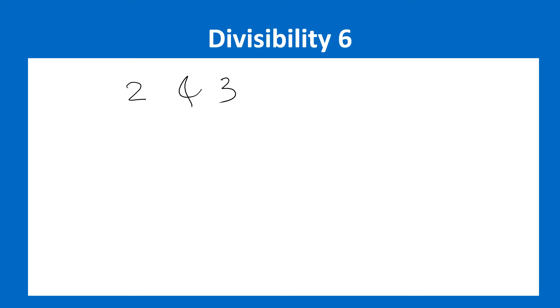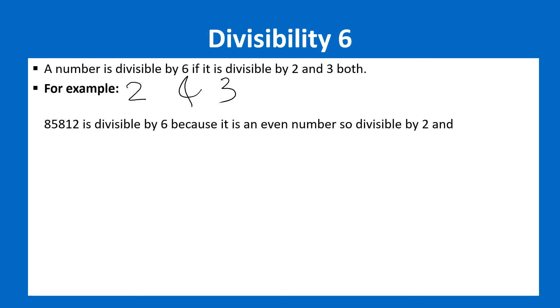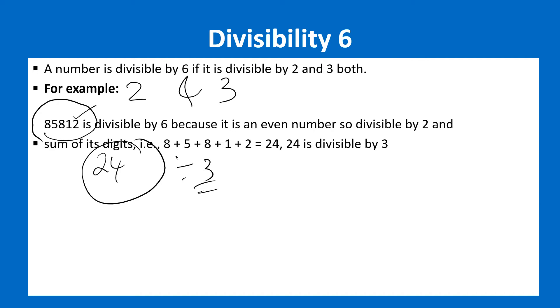For divisibility by 5, the last digit must be divisible by 5. For divisibility by 6, the number must be divisible by both 2 and 3 — so the last two digits and digit sum conditions must both be satisfied.